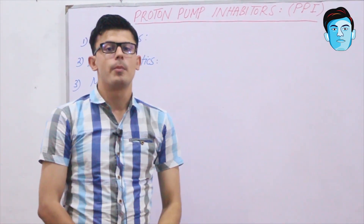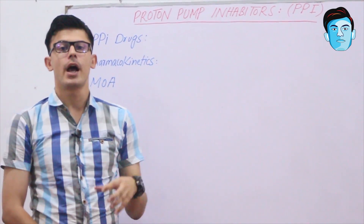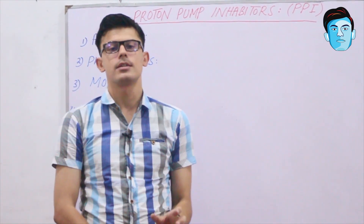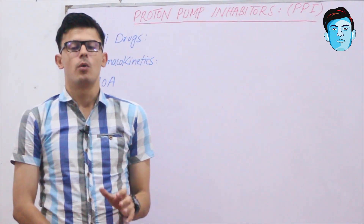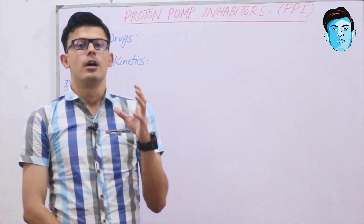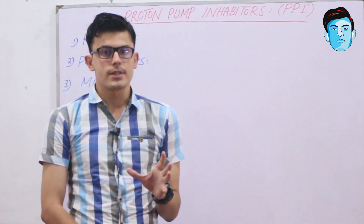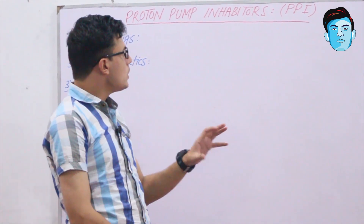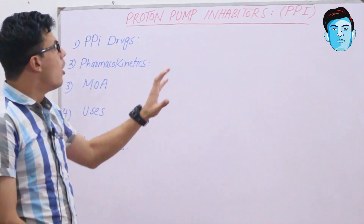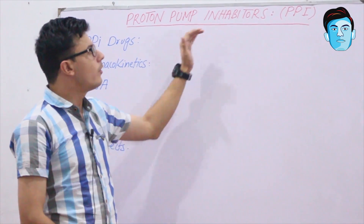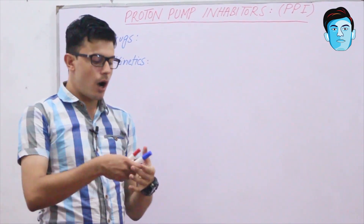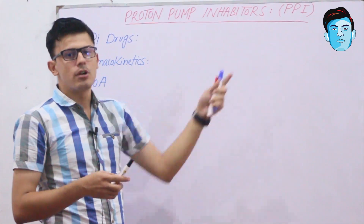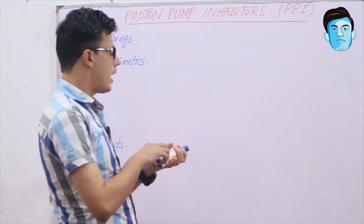What is PPI? PPI are the drugs that inhibit the gastric acid secretion of the stomach. Now, how can you easily pin down the PPI drugs? For that we have a mnemonic that will help you easily recall the PPI drugs.